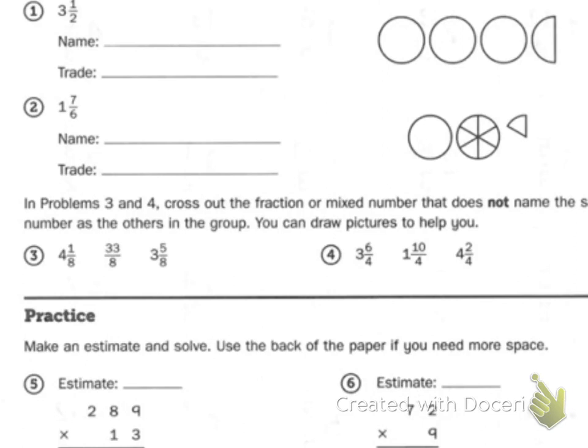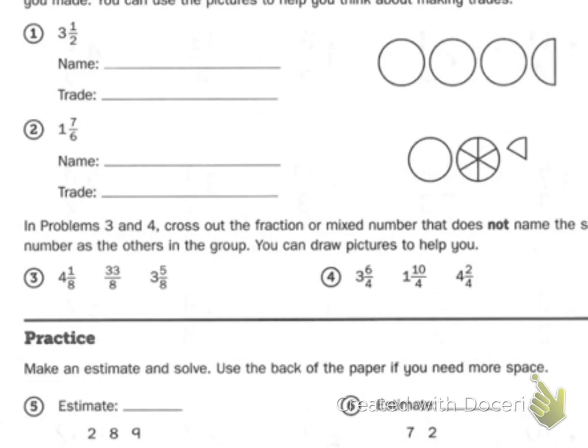For problem three, can we have four and one eighth? Let's look. Can we have four wholes? No — we don't even have four wholes. We only have one whole, two wholes, three wholes. We can't have four. Draw four or five circles split into eighths.